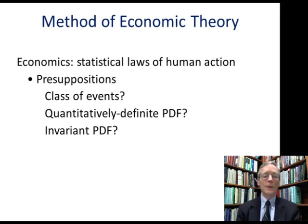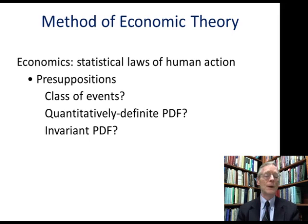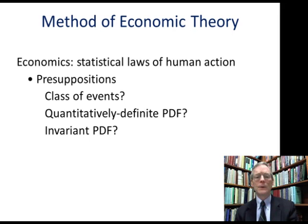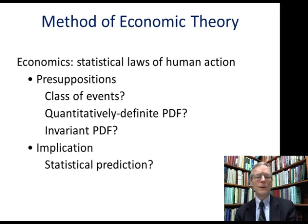It's also not safe to presuppose that the distribution of human action data is invariant. With a gambling game, we're fairly sure there is an invariant probability density function — the outcomes are constrained by the nature of the game. But with human beings, we have creativity and the ability to invent new possibilities of acting, which leads us to suspect these presuppositions do not hold. The implication is that statistical prediction about human action is called into question — we're not really safe making statistical predictions about human action.